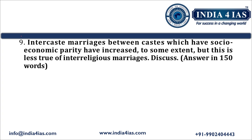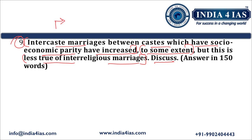Now we discuss question number 9: 'Inter-caste marriages between castes which have socio-economic parity have increased to some extent, but this is less true of inter-religious marriages. Discuss.' The question has two parts. In the first part, it says that inter-caste marriages between castes which are socio-economically at the same level — say caste A and caste B at equal standing — are showing an increasing trend. But the same is not true for inter-religious marriages.